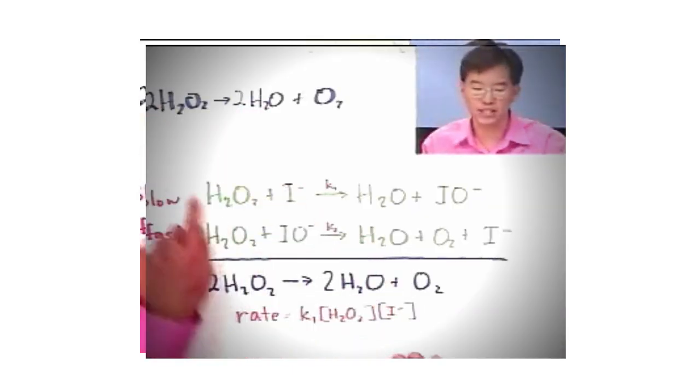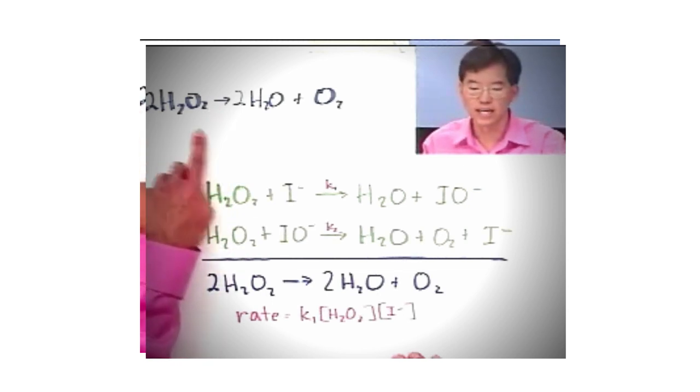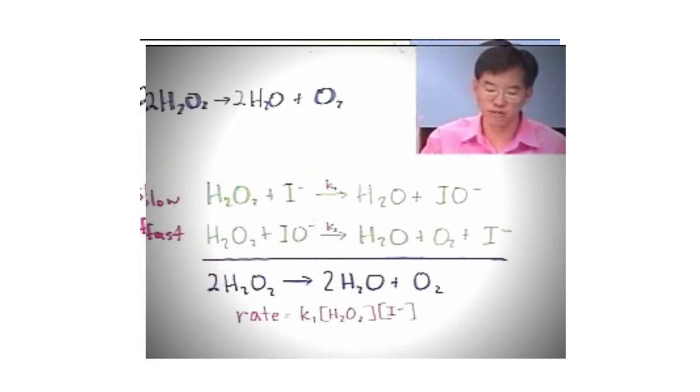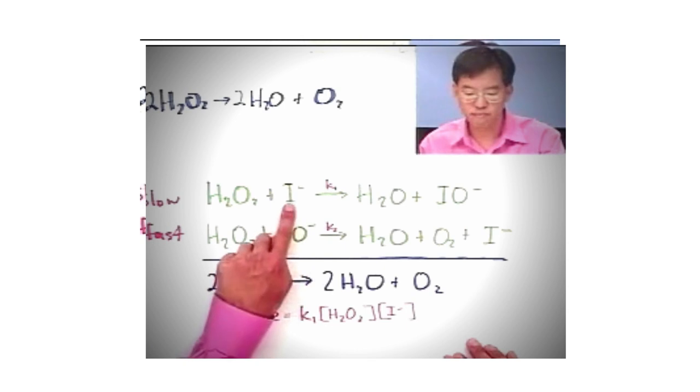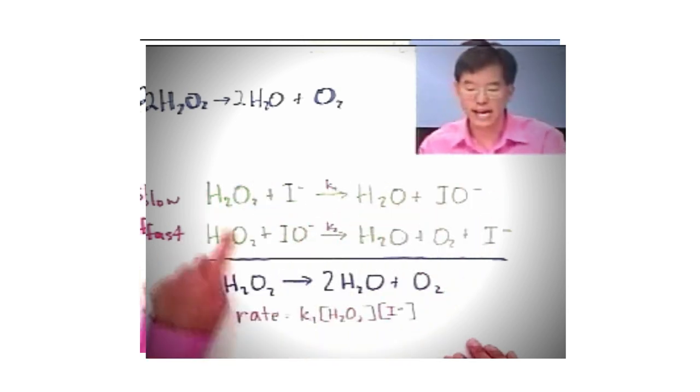Now this is an example of homogeneous catalysis, which means that the catalyst and the reactants are in the same phase. In this case, I should have written it, but this is an aqueous reaction, so this is aqueous hydrogen peroxide going to water and O2 when the O2 comes bubbling off. But this reaction occurs in aqueous solution.